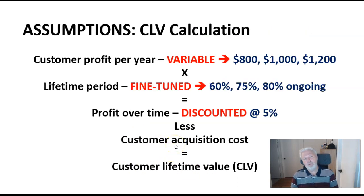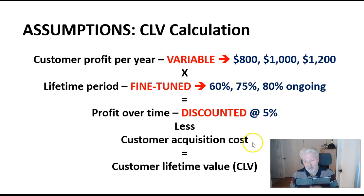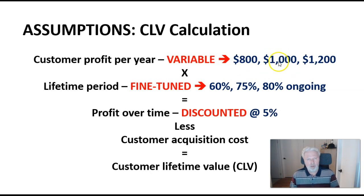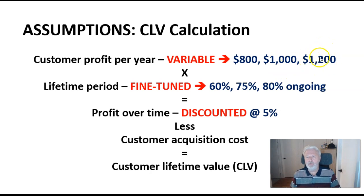I'm going to build in some assumptions using the prior example, changed slightly. Before we had an average profit of $1,000; this time a new customer coming in generates $800. In year 2 we make $1,000, and in year 3 and beyond we make $1,200.